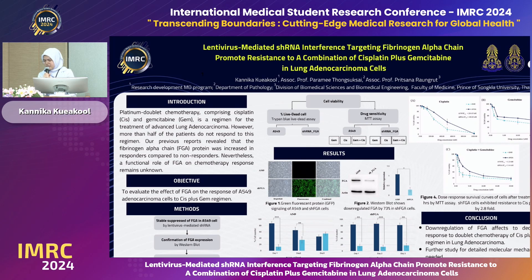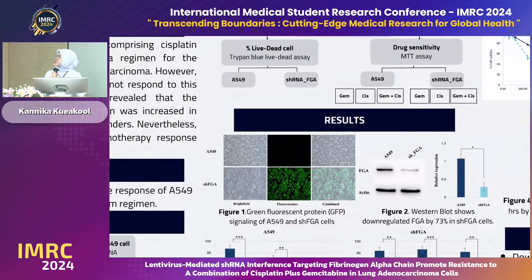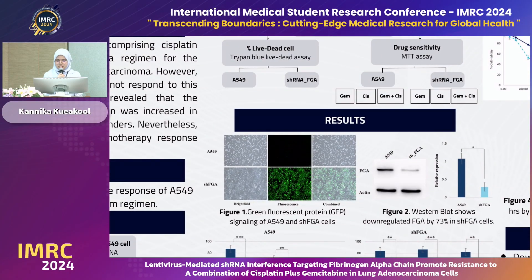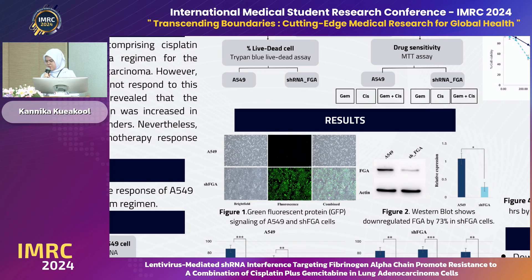We confirmed protein expression by Western blot analysis and investigated cell viability — the percent of live and dead cells — of A549 shRNA-FGA cells compared with shRNA-FGA by Triple-color live-dead assay. We also investigated the drug sensitivity assay of A549 parental cells compared to shRNA-FGA cells for both singlet and doublet chemotherapy using MTT assay.